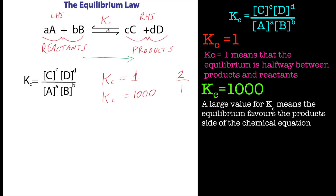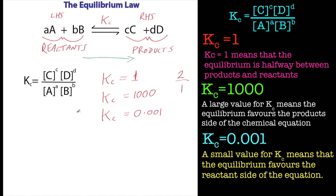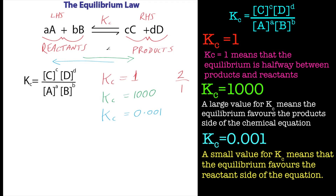Because it's a reversible process, some products will go back to reactants, so you'd probably need to remove products to keep driving it forward — remember Le Chatelier's principle. A small Kc value, like 0.001, means the value on the bottom is quite large, so the reaction is being driven to the left — there's not much reaction going on.